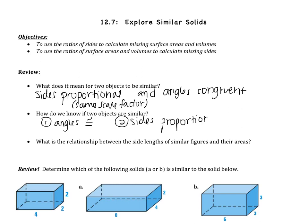The one we are going to focus on today is sides being proportional. What is the relationship between the side lengths of similar figures and their areas? This goes back to chapter 11. Hopefully you remember that if you have similar figures, when you square the sides, you will get the ratio of the areas. You're going to have to use that today, so keep it in the back of your mind.